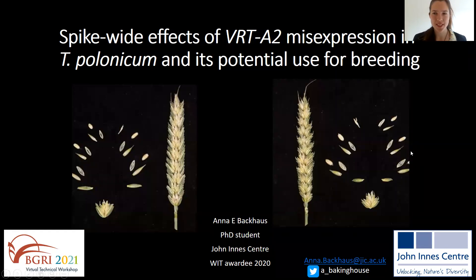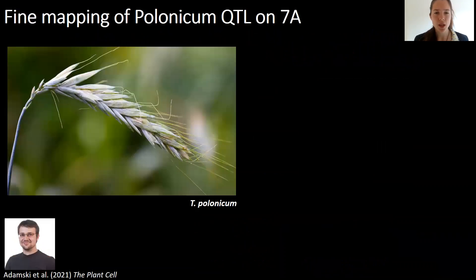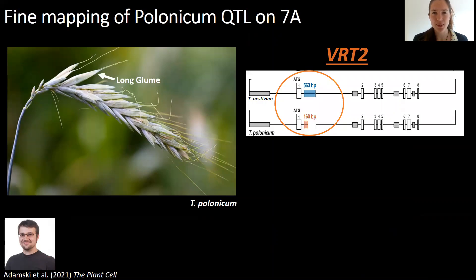Welcome to my three-minute presentation on the effects of Triticum polonicum integration to hexaploid wheat. This is Triticum polonicum, and it's famous for its very long glumes, as you can see here. Recently, Nikolai from our lab was able to show that the underlying causal mutation for this elongated glume phenotype is a rearrangement of intron 1 in VRT2, a known flowering gene.